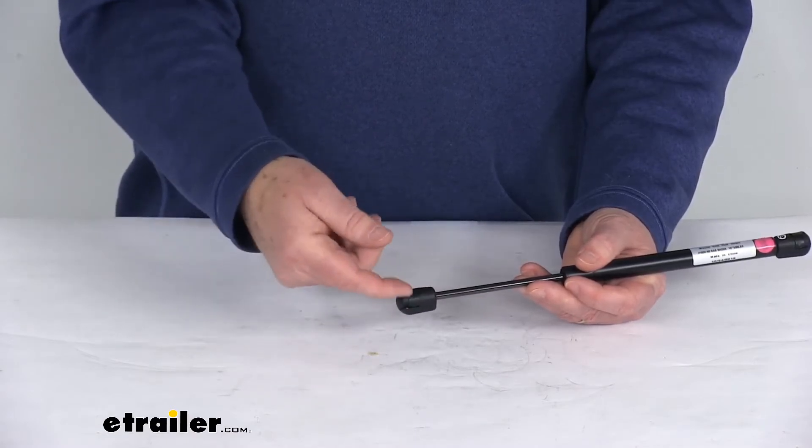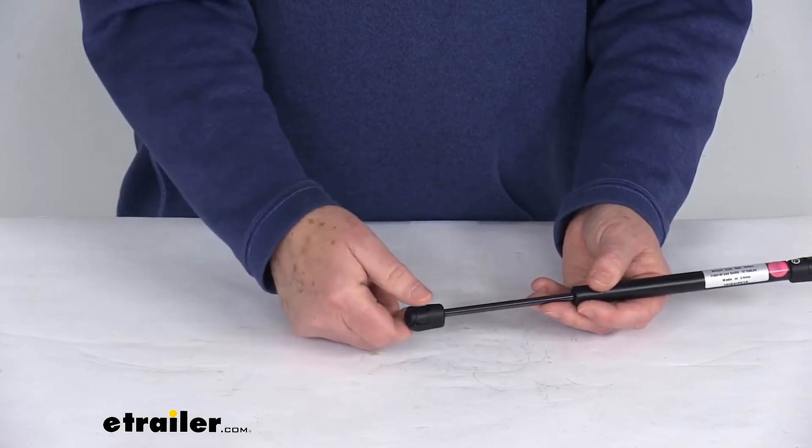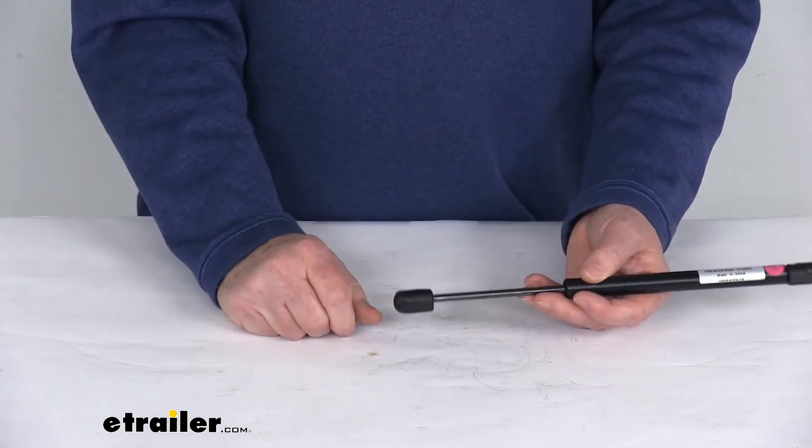Now you don't want to remove the clip all the way, just pop it open enough that you can place this over the 10 millimeter ball and then push that clip right down into position. It'll secure it.